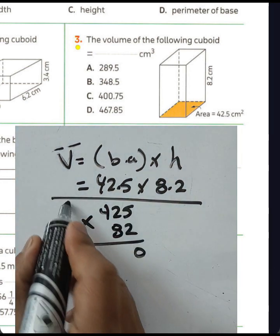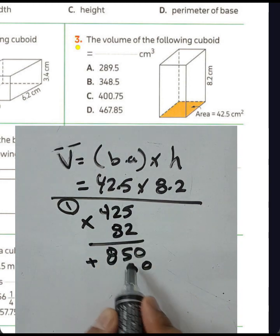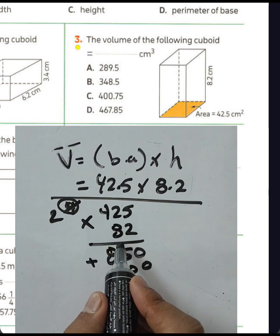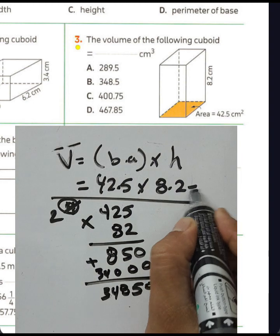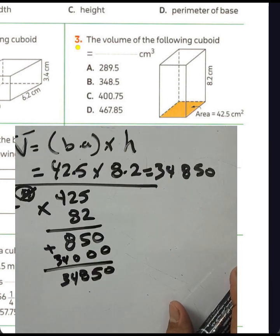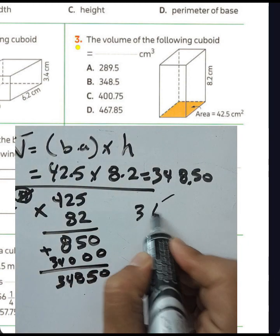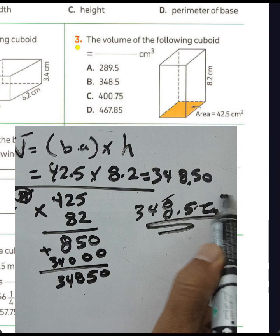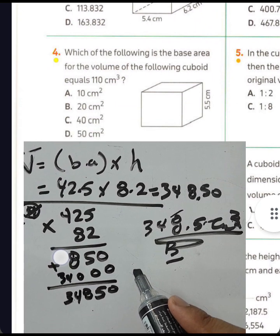Multiplying 425 by 62 step by step: 2 times 5 equals 10 (zero carry 1), 2 times 2 is 4 plus 1 equals 5, 2 times 4 equals 8, then 5 times 62 gives 3085. Adding gives 34850, and the point goes after two places, so the result is 348.5 cubic centimeters.